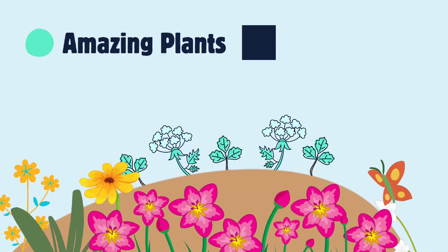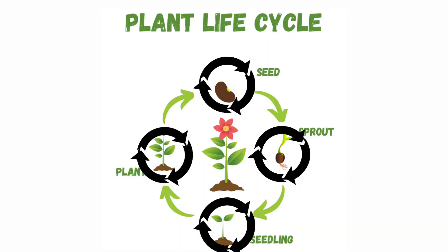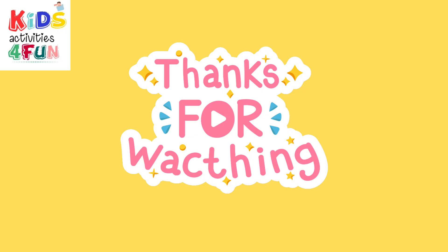So, kids, this is the life cycle of a plant: seed, germination, plant, flower, fruit, and again seed. It keeps going round and round in nature.